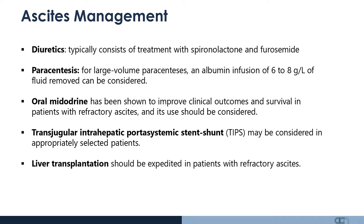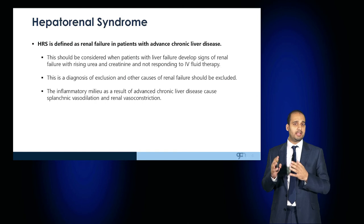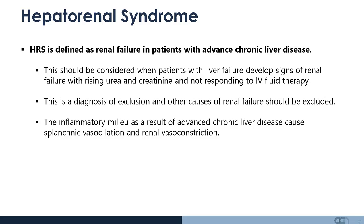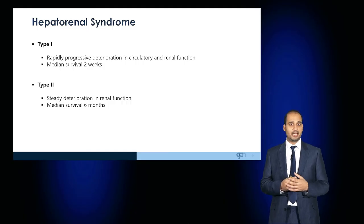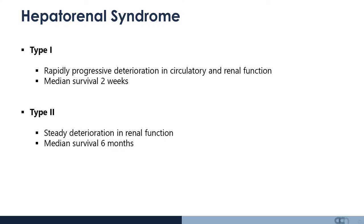It's important to manage liver disease aggressively, as the patient may develop hepatorenal syndrome — failure of the liver and kidneys. This occurs in patients who rapidly develop liver and renal failure, detected by rises in urea and creatinine that do not respond to conventional fluid therapy. In hepatorenal syndrome Type 1, which is rapidly progressive, median survival can be as little as two weeks. Type 2 is a more steady deterioration in renal function with a median survival of six months.